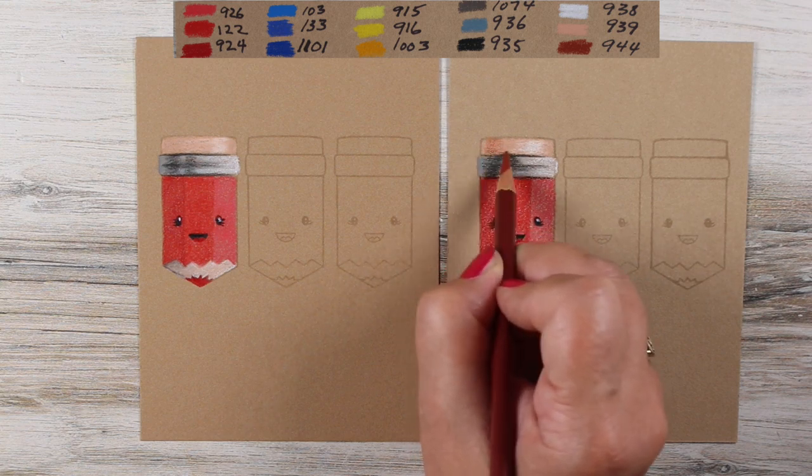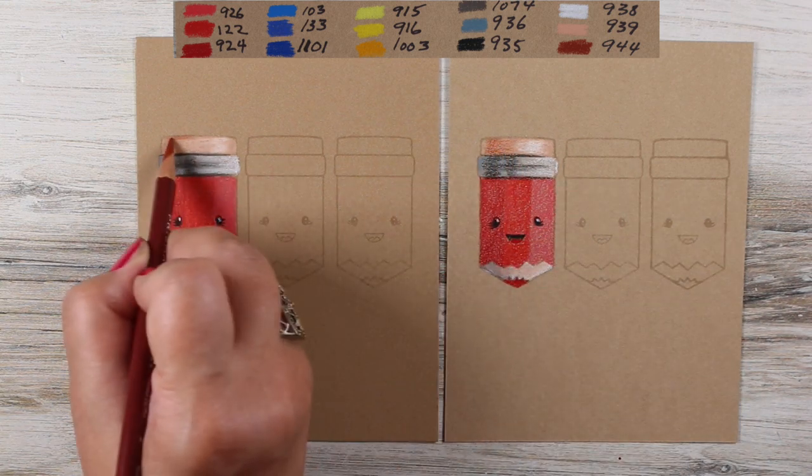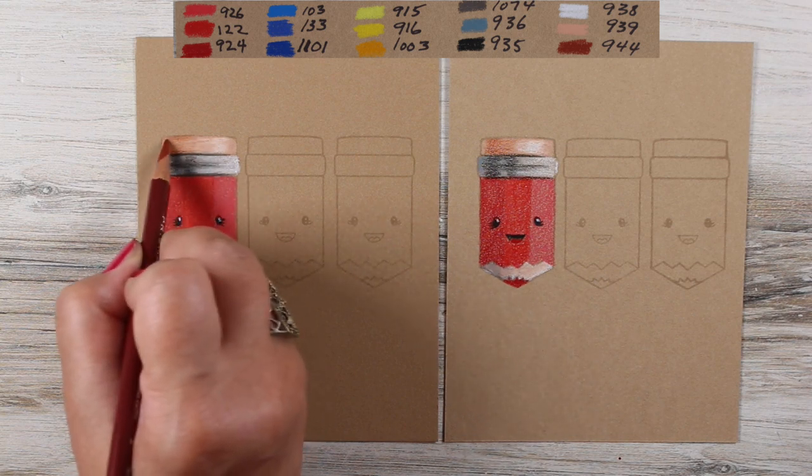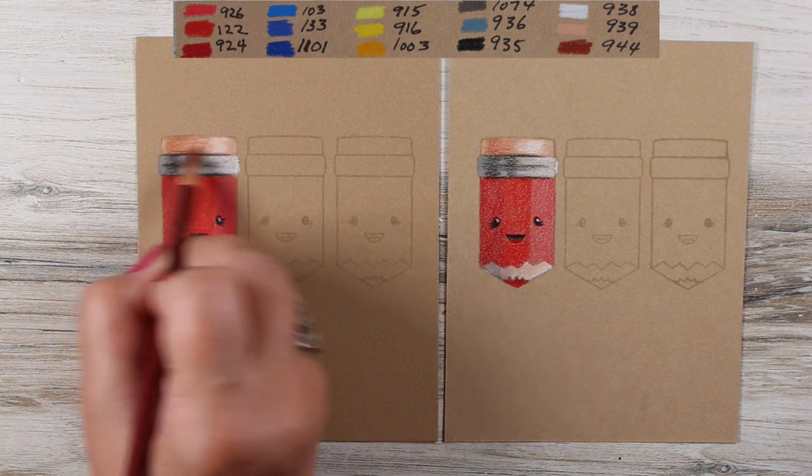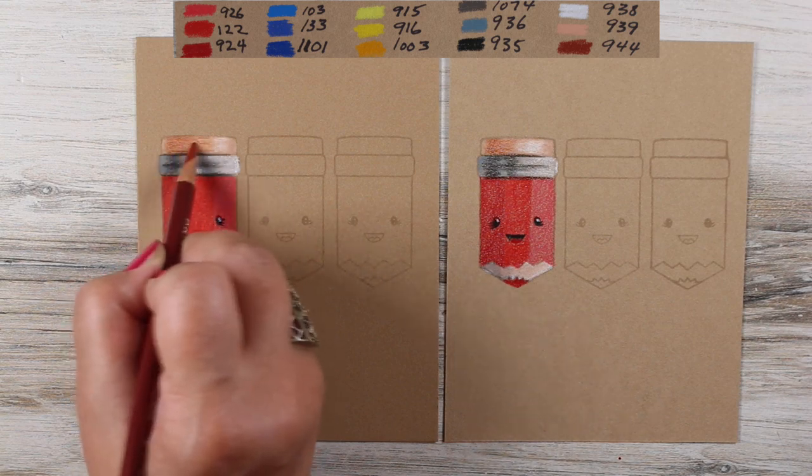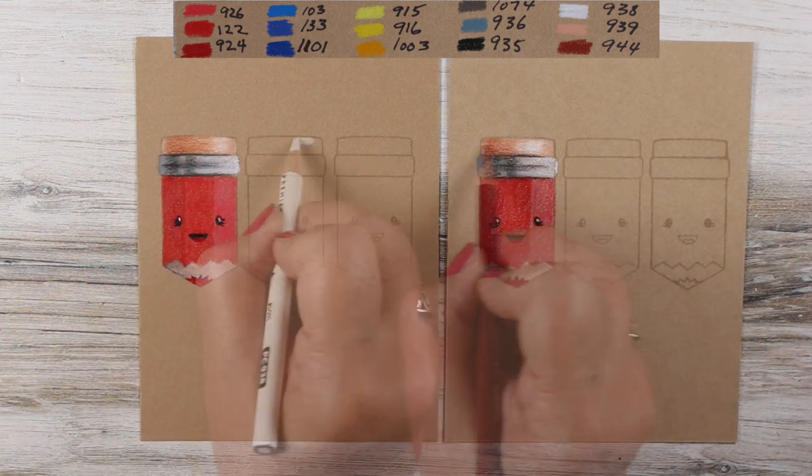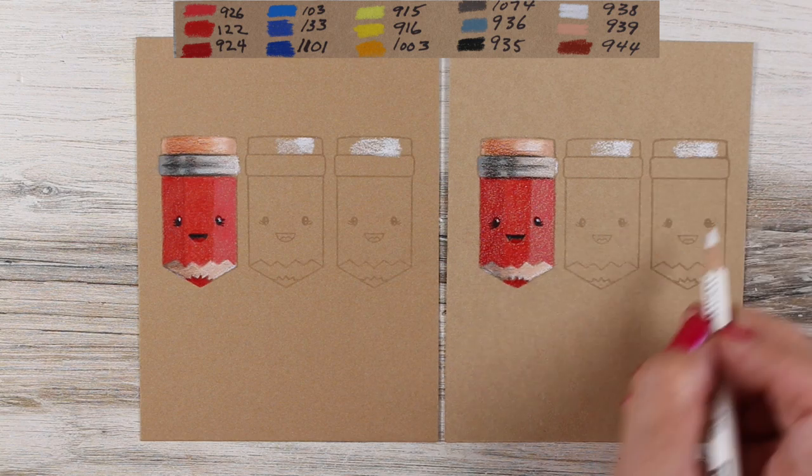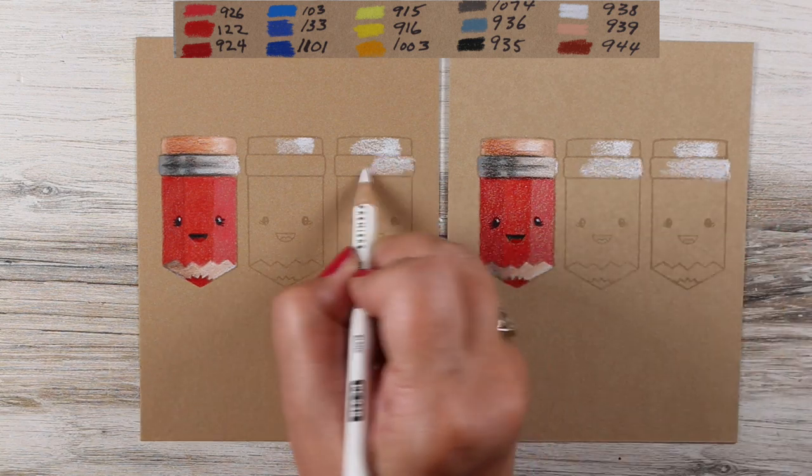Then I added a little bit of that 944 just to add a reddish brown shadow on one side. That is one of the pencils. The other two, I am going to color in super fast mode because you've now seen one of them.